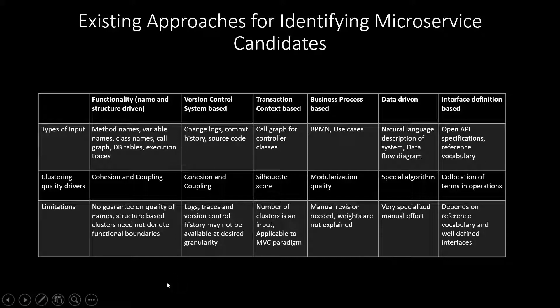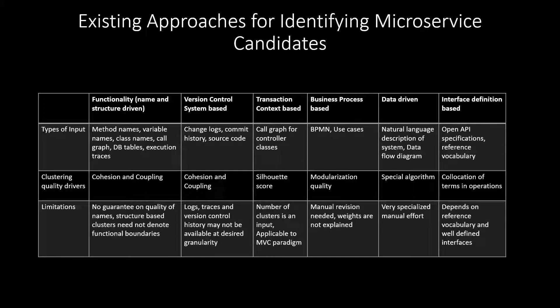Another way that people have studied the decomposition of monoliths is through version control systems. They study the change logs, commit history, and source code, and try to group the files which have the tendency to be committed together or where the changes happened together. The idea being that if some functionality is impacted, then probably the files that are committed together will also belong to that functionality.